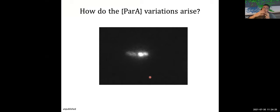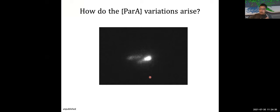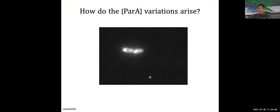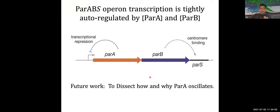This leads to a final question: where does the ParA concentration variation come from? Our data shows that ParA actually oscillates from pole to pole, but this does not correlate with the motion of the plasmid. On one hand, this means the two daughter cells will inherit very different amounts of ParA upon cell division, which explains the cell-to-cell variation. But on the other hand, this deepens the puzzle, because we know the parA and parB genes are auto-regulated — the levels of ParA and ParB directly regulate their own gene expression — suggesting tight control over ParA amounts. So in the future, we will try to dissect how and why ParA oscillates.